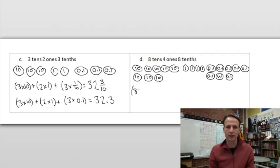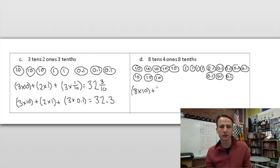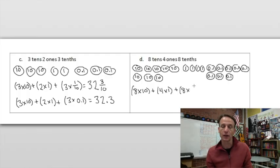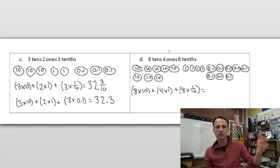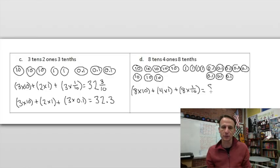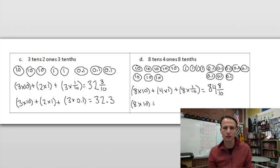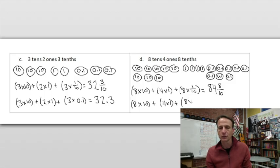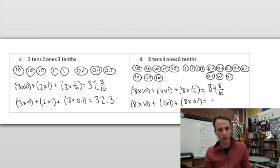How many times did we write ten? Eight times ten. How many ones? Four times one. How many times did we write one tenth? Eight times one tenth — written as the fraction one tenth. In unit form: eight tens is eighty, so eighty-four and eight tenths as a mixed number. In decimal form, those whole numbers stay the same — only the one tenth changes to 0.1 — giving us 84.8.